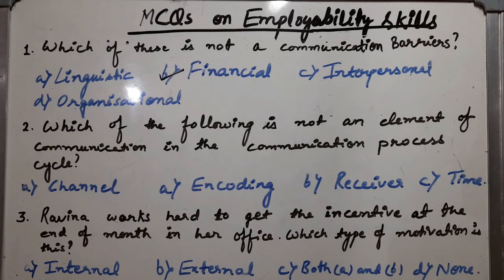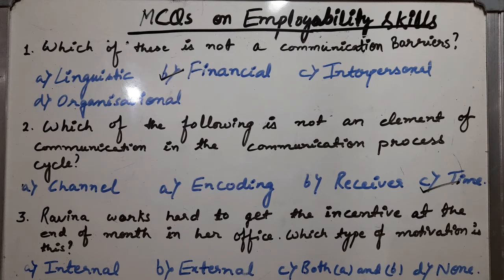Second MCQ: Which of the following is not an element of communication in the communication process cycle? The correct answer is time. In the communication process cycle you will find channel — the communication medium through which we pass our information — encoding, which is the process of framing the message, and receiver. These are all elements of the communication cycle, but time is not there.